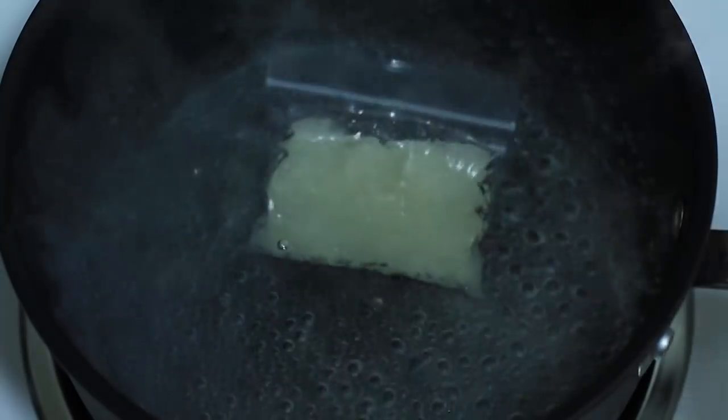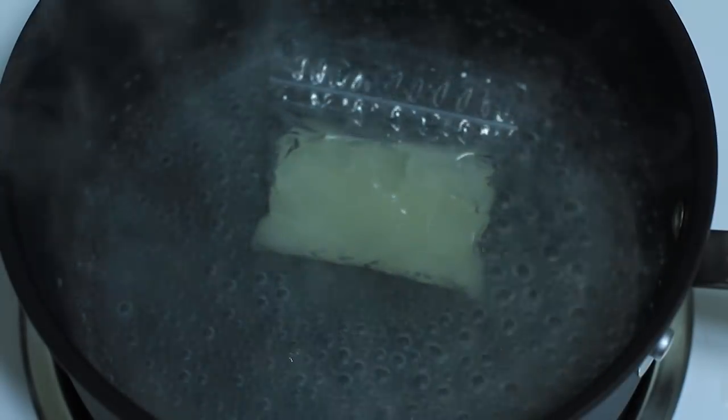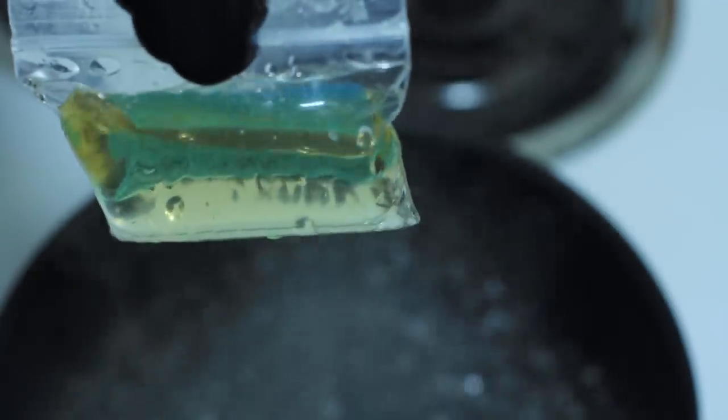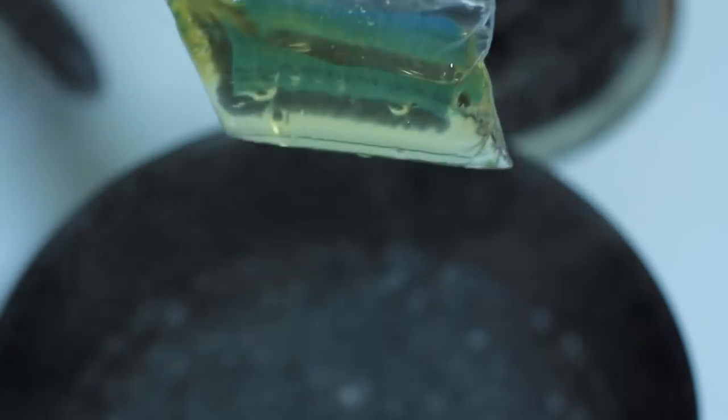But how do we make it reusable? Simple. I brought some water to a boil and tossed the bag in for about one minute. Once I pull it out, you can see it's back to its dormant liquid state. Let it cool to room temperature again and you can use it over and over again.